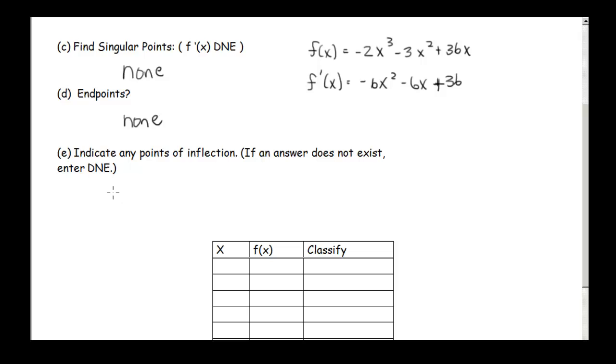Next we're supposed to find the inflection points. So remember those inflection points occur where that second derivative equals 0. So let's find the second derivative. Our second derivative is negative 12x minus 6. We're going to set that equal to 0. So negative 12x minus 6 equals 0. That gives us negative 12x equals 6. So x equals negative 6 divided by 12 or negative 0.5.